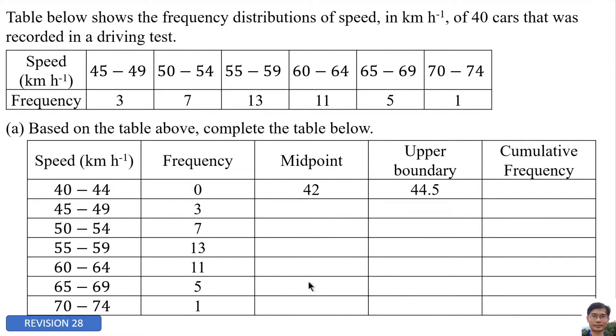We need to fill in the midpoint. Midpoint is 40 plus 44 and then divided by 2. We can see it in another way: 42 is also the same as 40 plus 2. For the second midpoint, 45 plus 2 equals 47, or 45 plus 49 divided by 2 also equals 47. Then 45, 47, 50, 52, 45, 57, and so on.